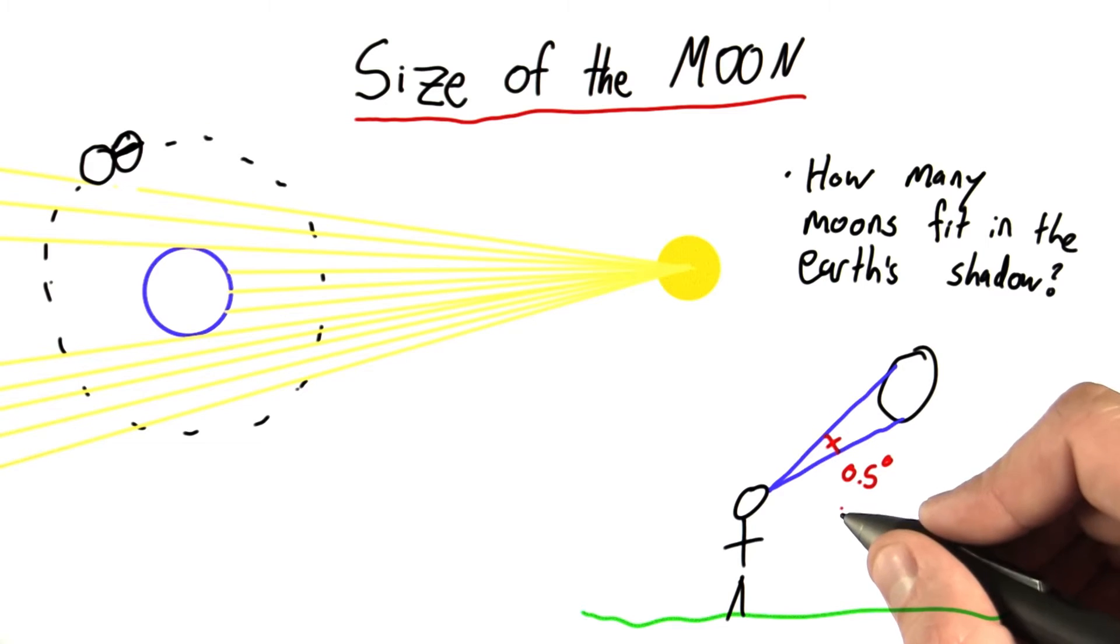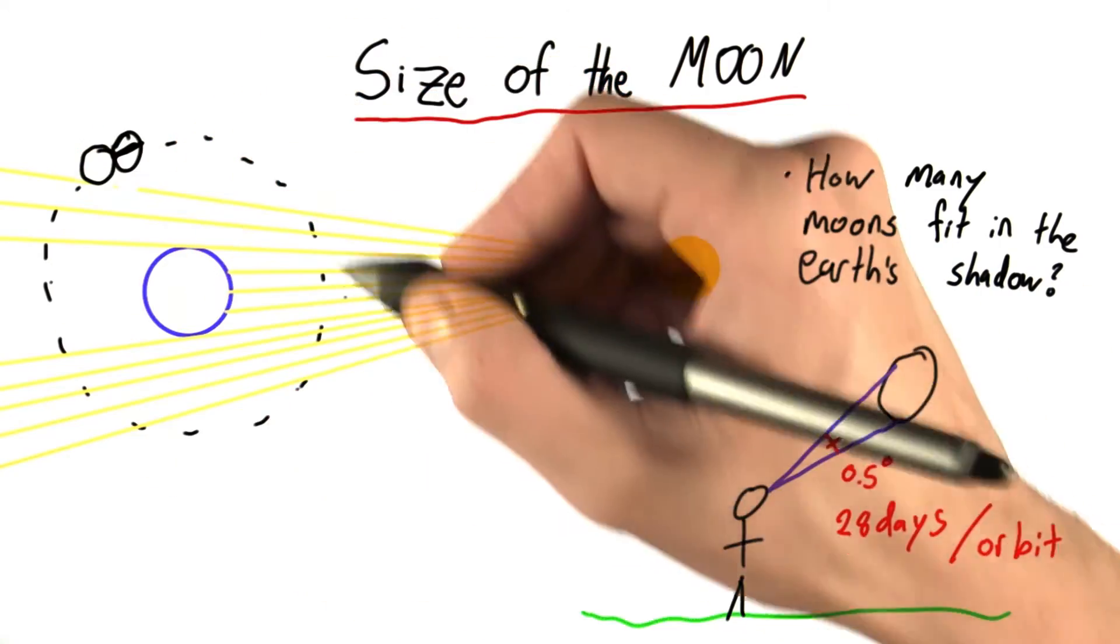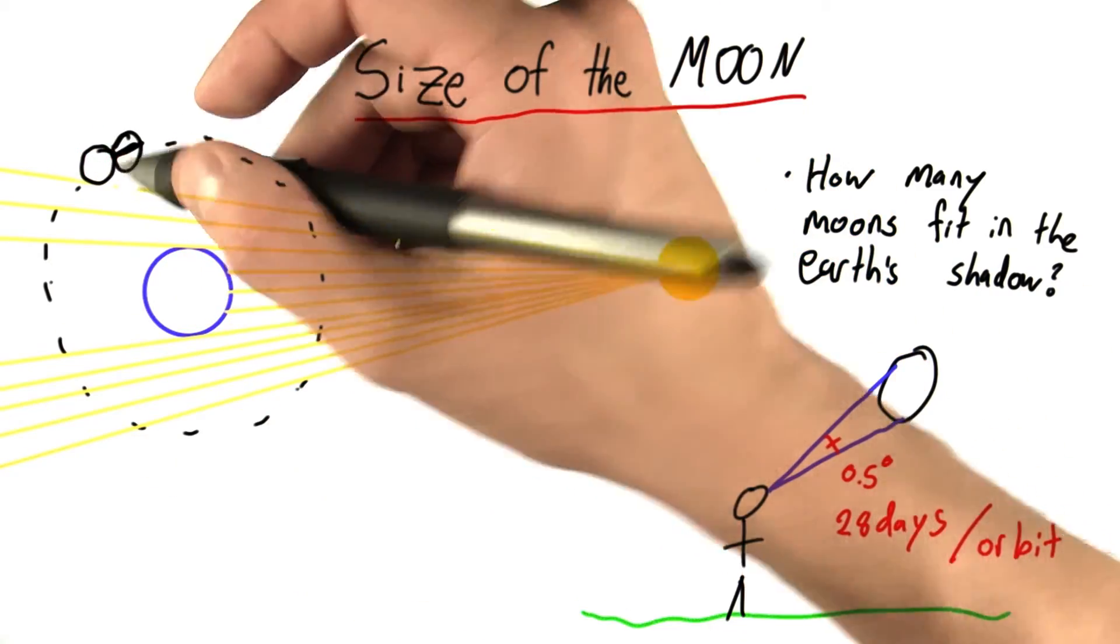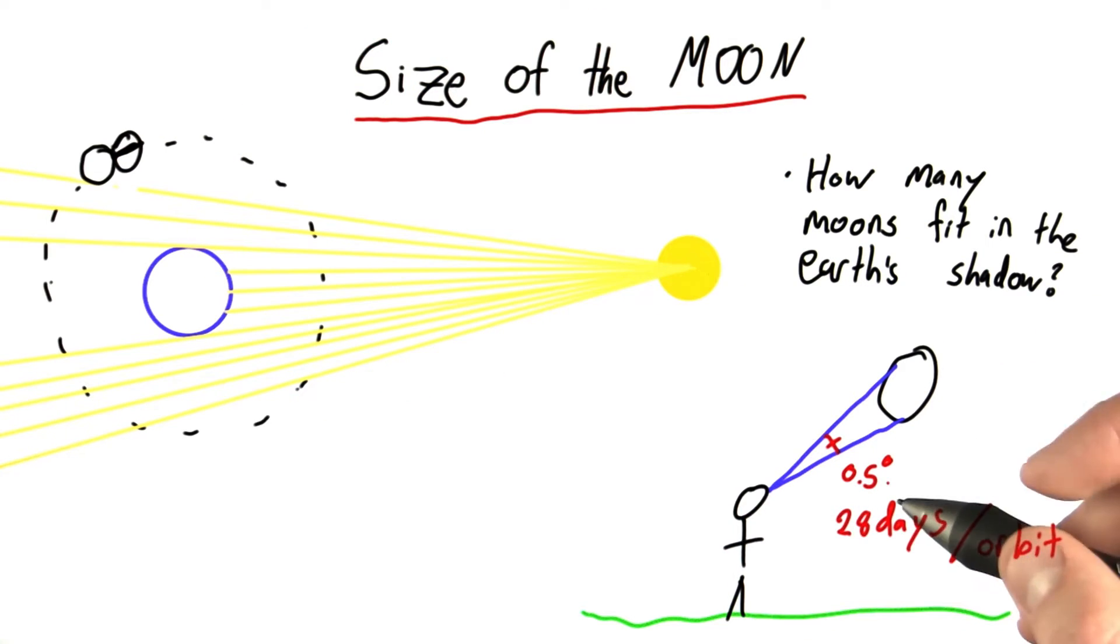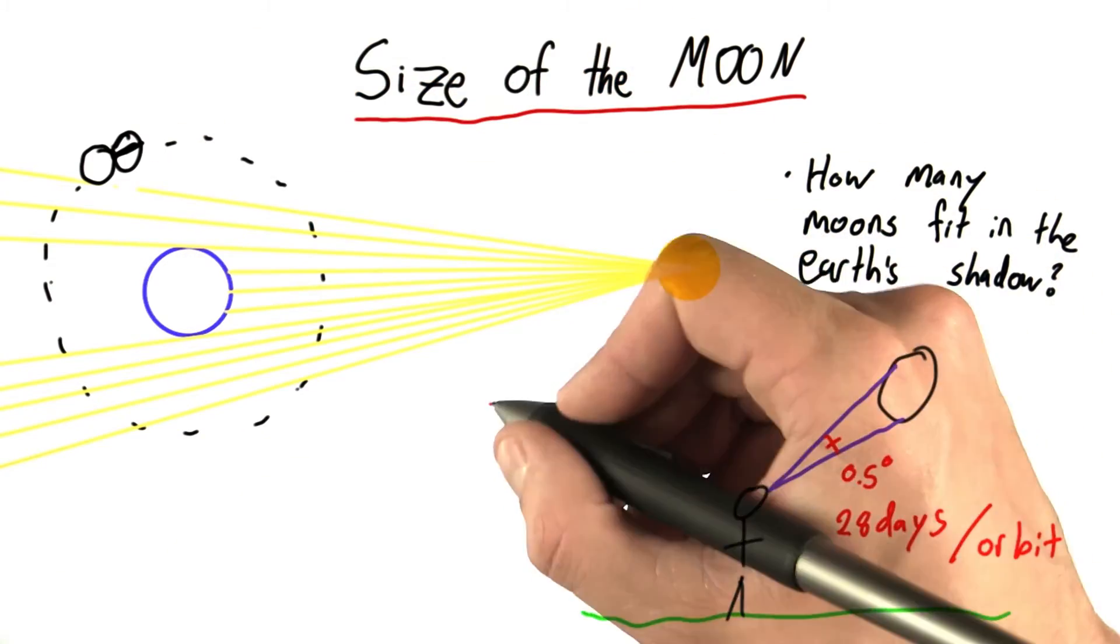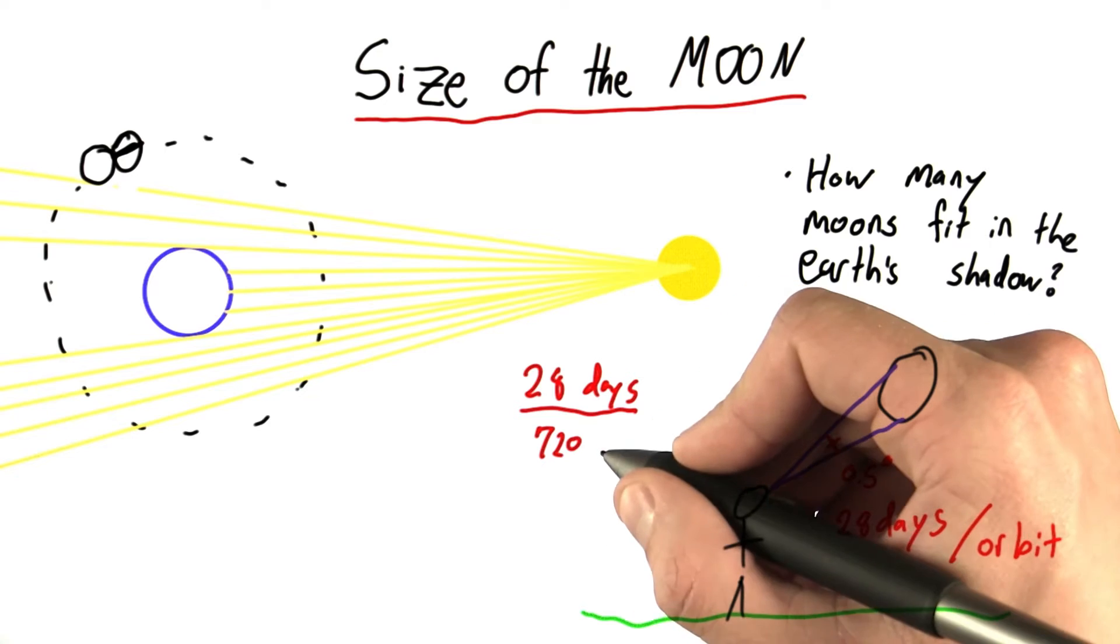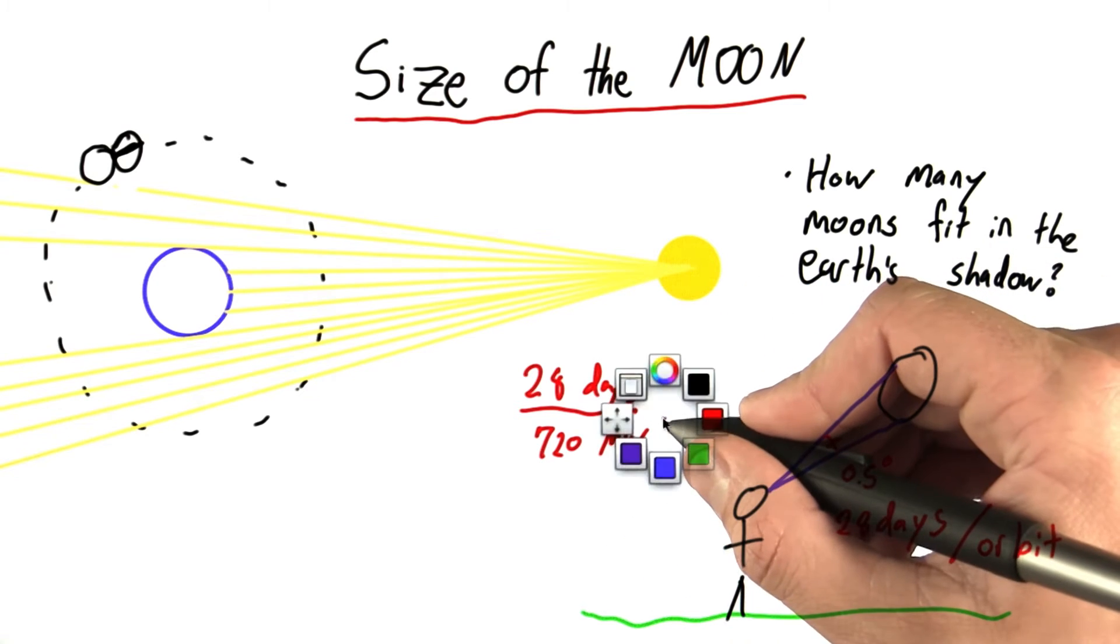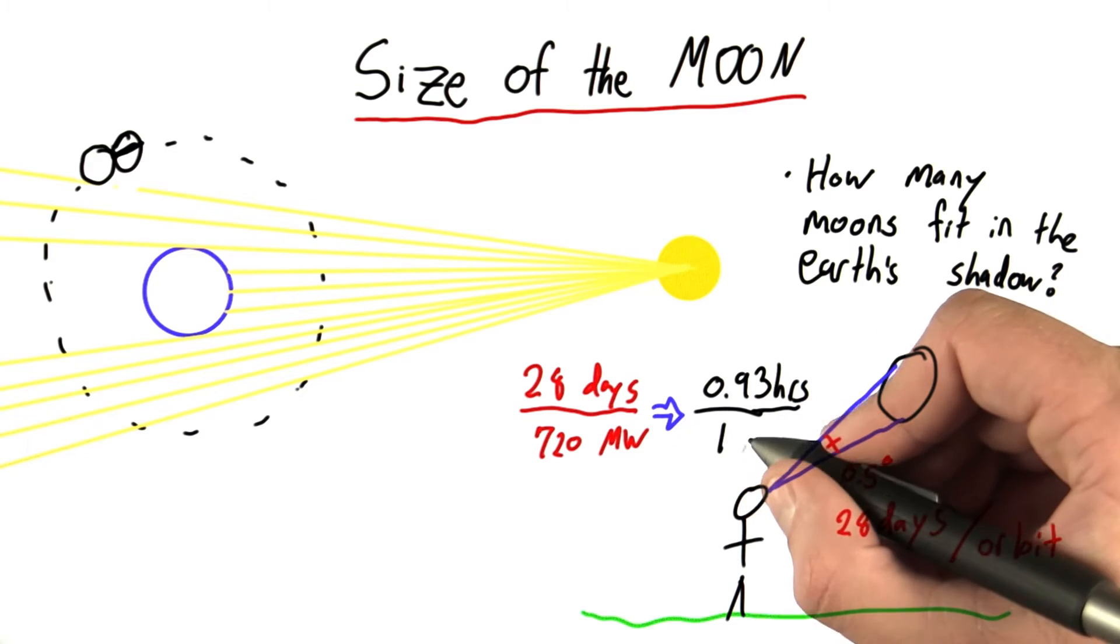We also know that it takes 28 days for one complete orbit. So in 28 days, it's gone 360 degrees. So that means it's gone 720 moon widths, since each width is only half a degree, and 720 is twice 360, which means 28 days per 720 moon widths. And if we do some unit conversion, that works out to be 0.93 hours for one moon width.